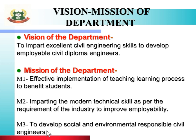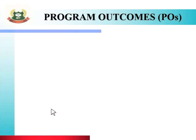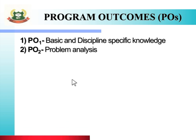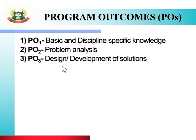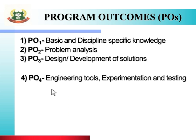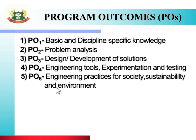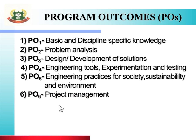To achieve this vision and mission, there are seven program outcomes. PO one is basic and discipline specific knowledge. PO two is problem analysis. PO three is design development of solutions. PO four is engineering tools, experimentation and testing. PO five is engineering practices for society, sustainability and environment. PO six is project management. PO seven is life long learning.